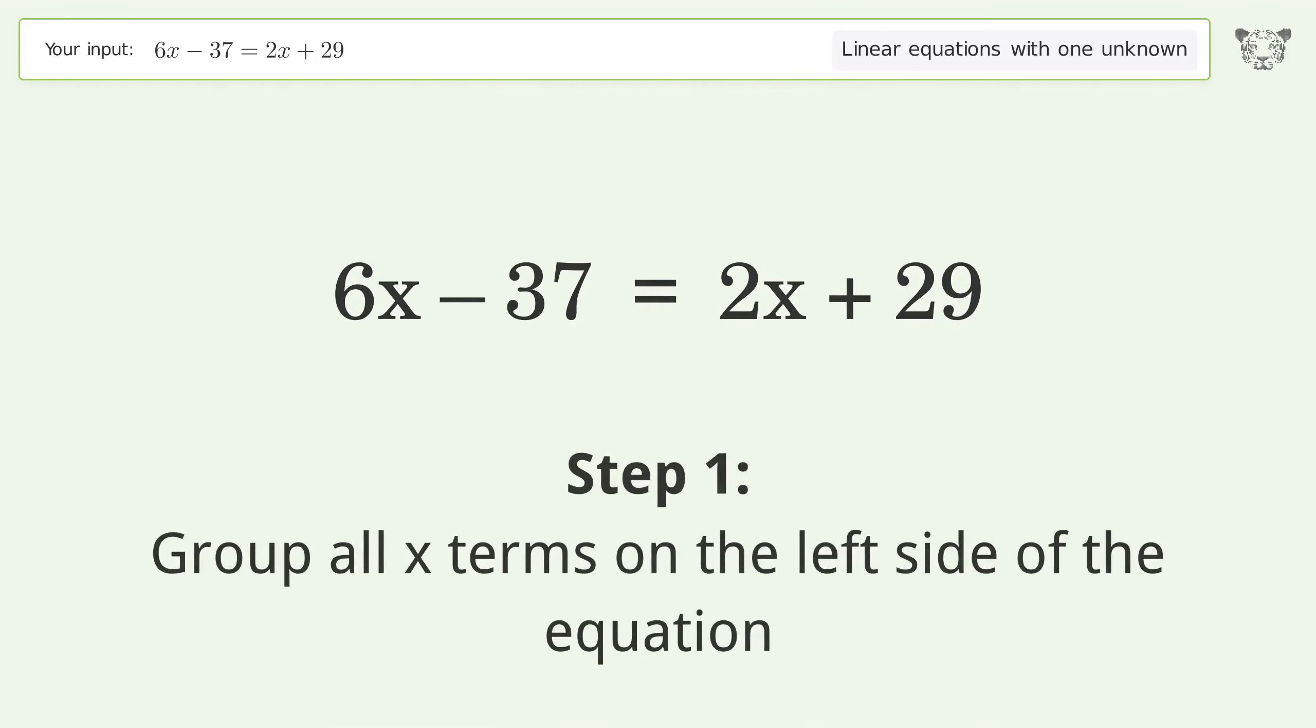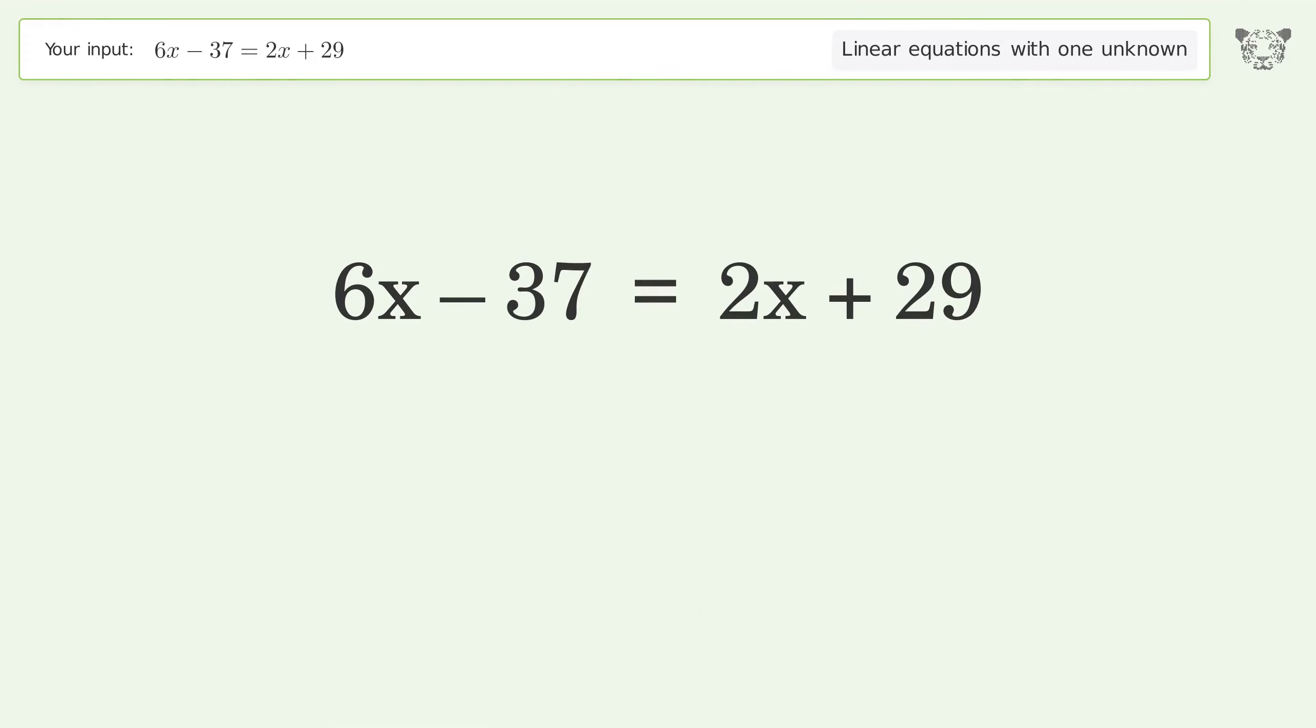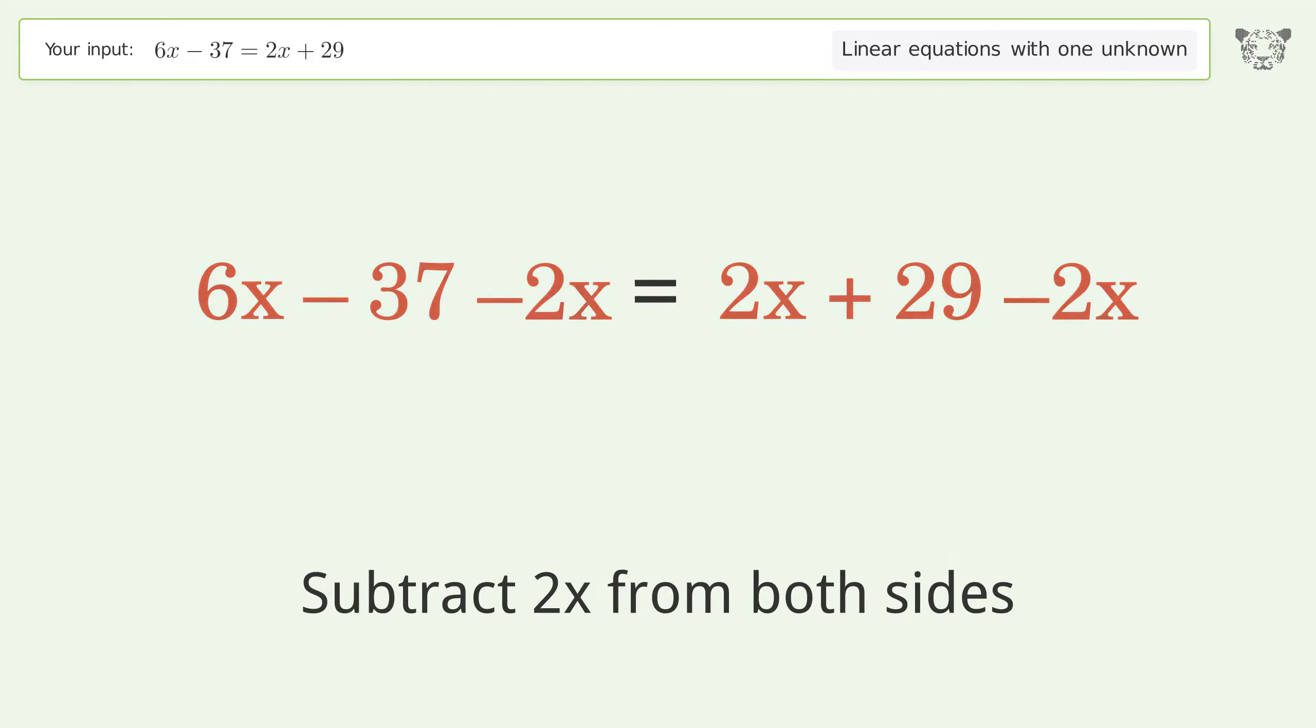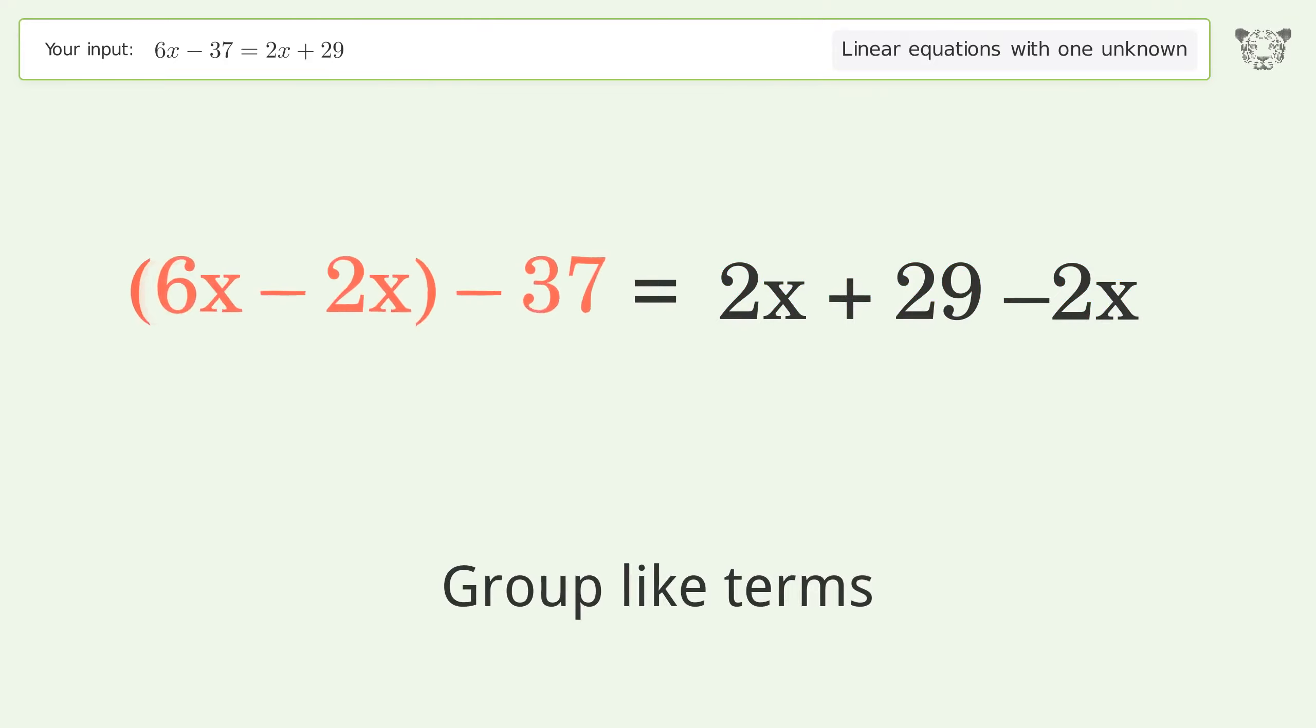Group all x terms on the left side of the equation. Subtract 2x from both sides. Group like terms. Simplify the arithmetic.